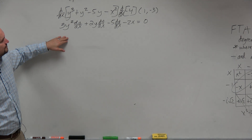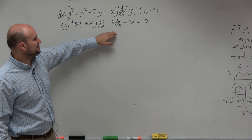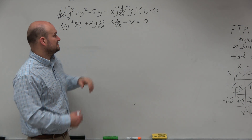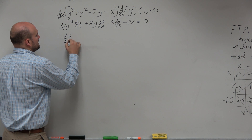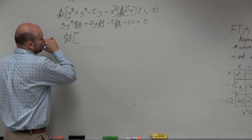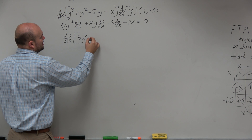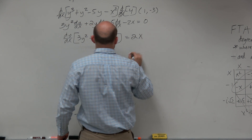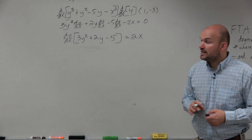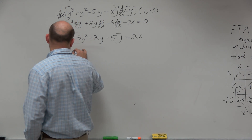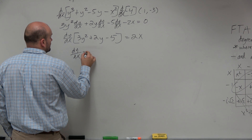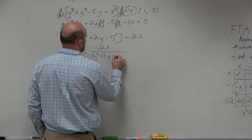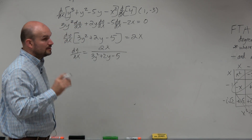Now what we want to do is collect our dy/dx's and then add the 2x to the other side. So I could factor out a dy/dx, and when I do that I'm left with 3y² plus 2y minus 5 equals 2x. And then dy/dx is equal to 2x all over 3y² plus 2y minus 5.